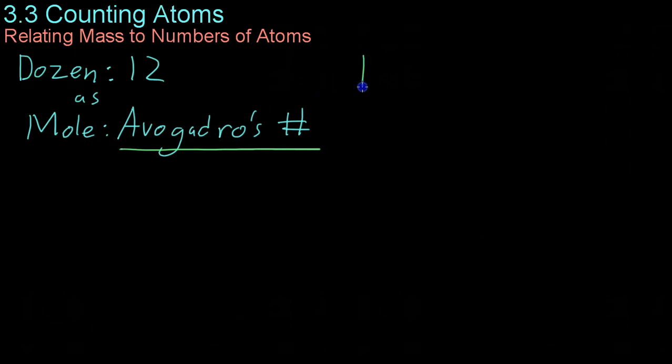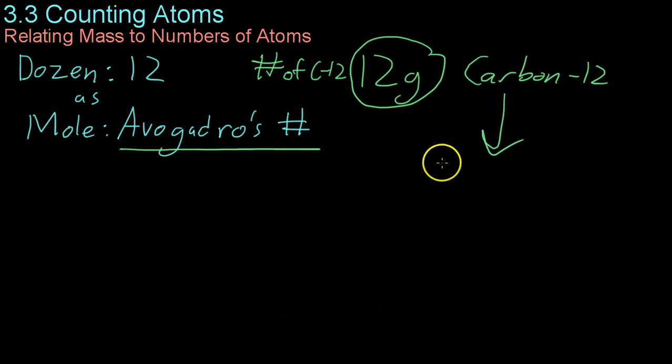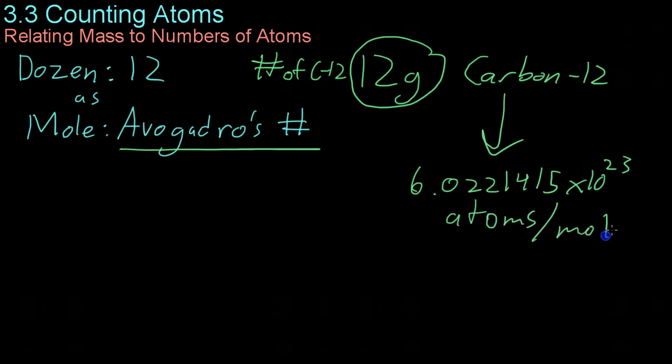And Avogadro's number was determined by measuring the number of carbon-12 atoms in 12 grams of carbon-12. And the best estimate we have right now is that it is 6.0221415 times 10 to the 23rd atoms or molecules per mole, which is an astronomically large number.